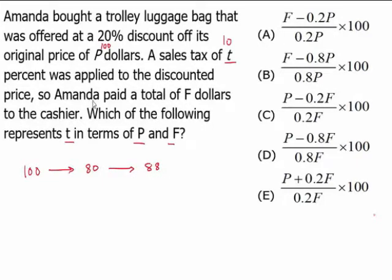And Amanda paid a total of F dollars, so 88 is F. She must have paid $88 if she started with $100 as the original price and the sales tax being 10%. So now that we have P as 100, F as 88 and T as 10, all we are going to do is plug in these numbers into the options and check out which one of these is going to give us a 10% for T.